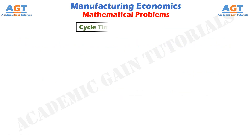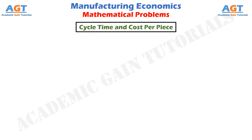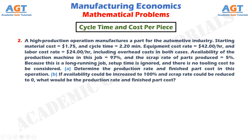Now let's look at another problem on cycle time and cost per piece. A high-production operation manufactures a part for the automotive industry. Starting material cost equals $1.75, cycle time equals 2.20 minutes, equipment cost rate equals $42 per hour, and labor cost rate equals $24 per hour, including overhead costs in both cases. Availability of the production machine equals 97%, and the scrap rate of parts produced equals 5%. Because this is a long-running job, setup time is ignored and there is no tooling cost to be considered.